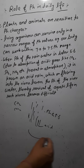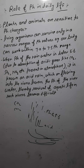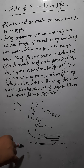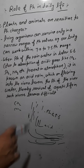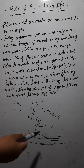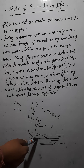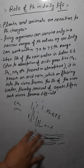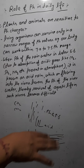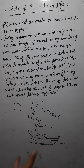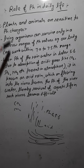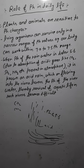When acid rain flows into rivers, the river water also becomes acidic with pH decreasing below 5.6. Aquatic life like fish can only survive within a particular pH range. In such acidic conditions the fish and other aquatic organisms die. This is another way pH affects plants and animals.